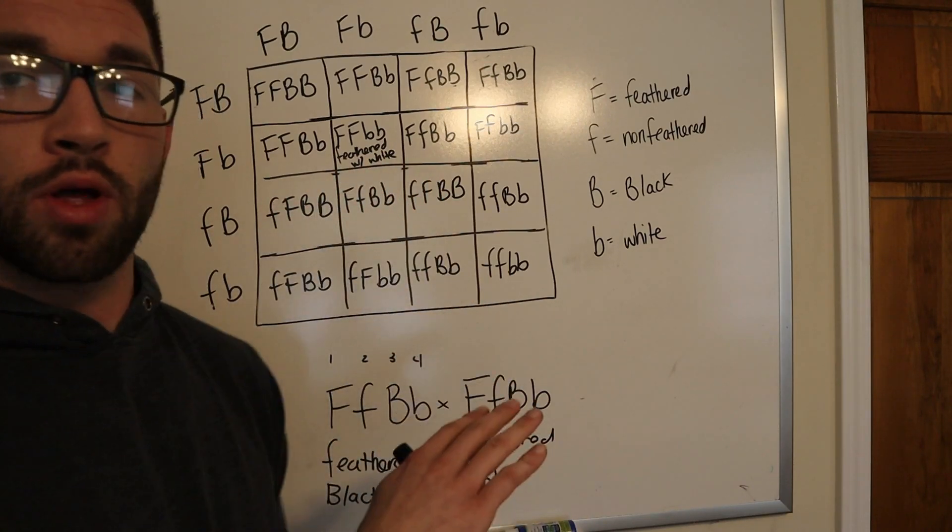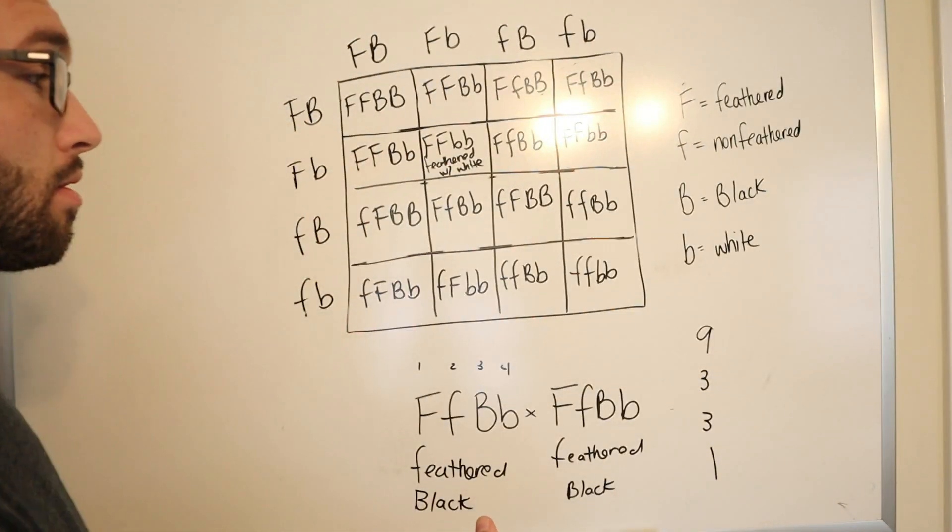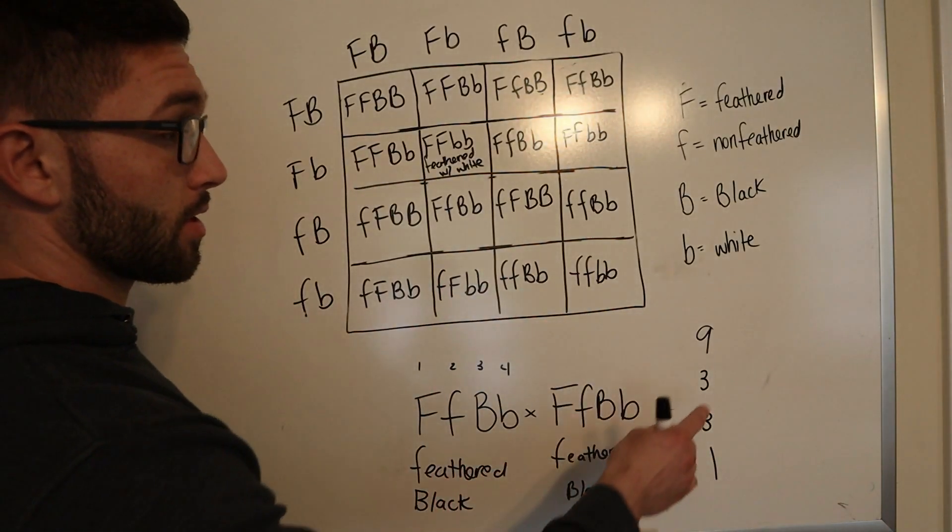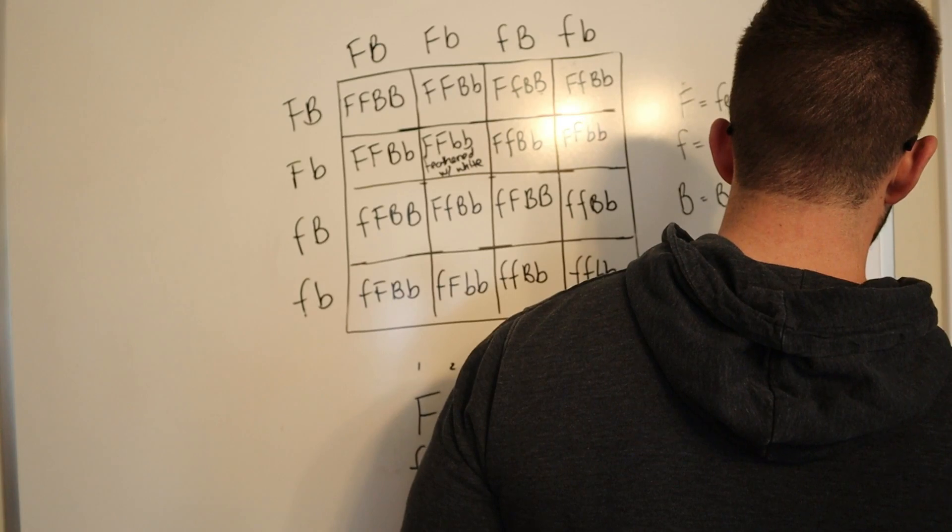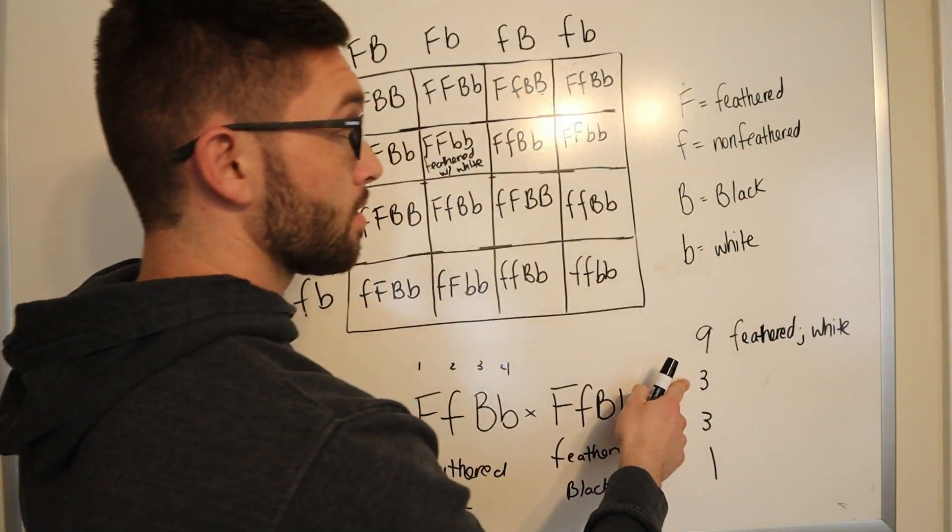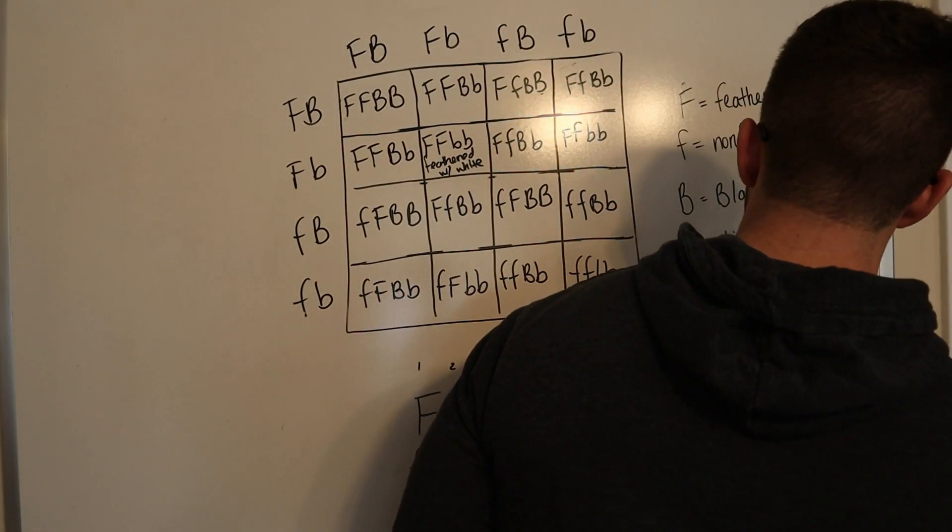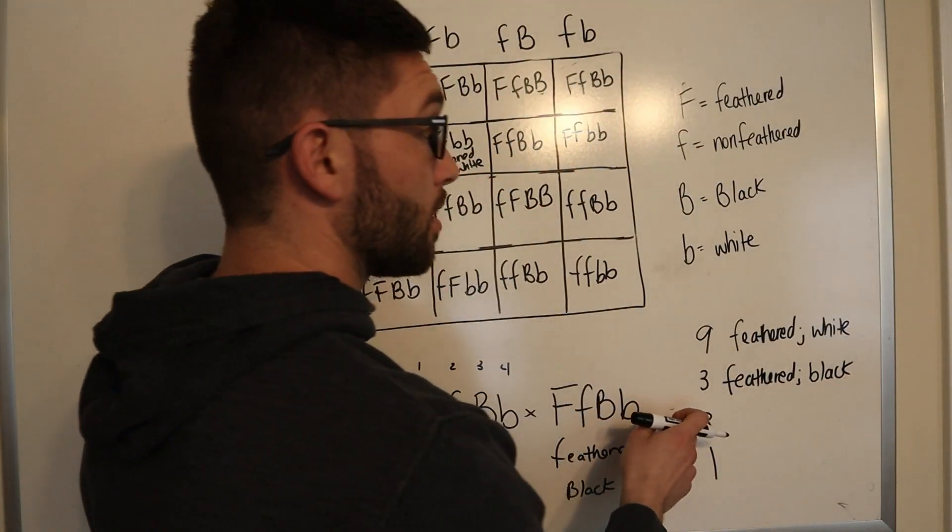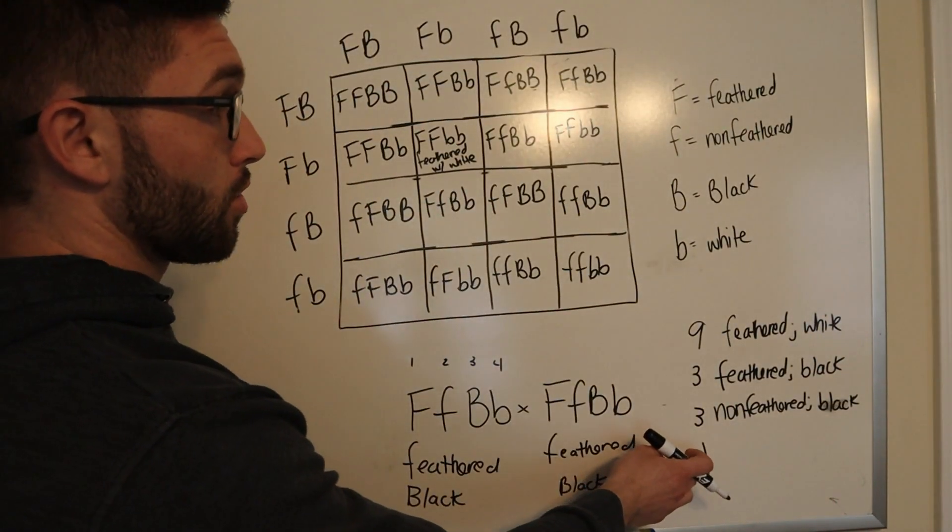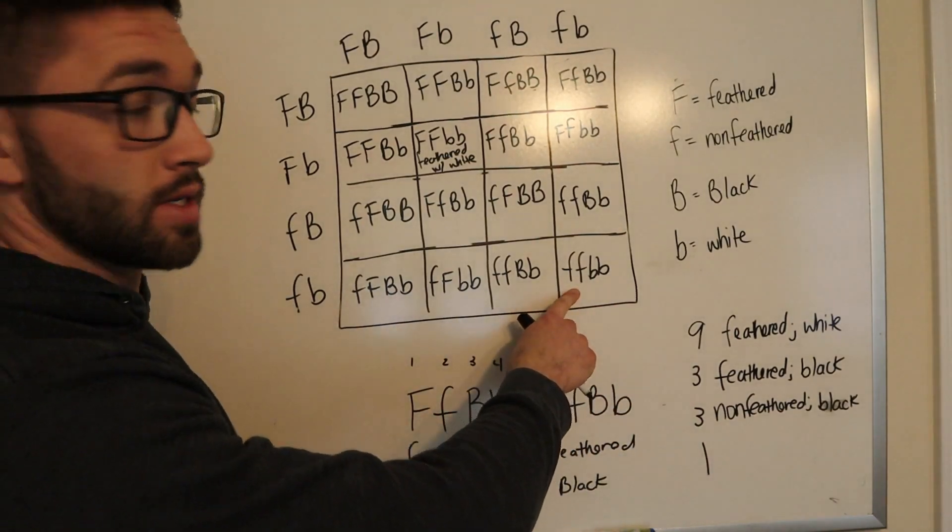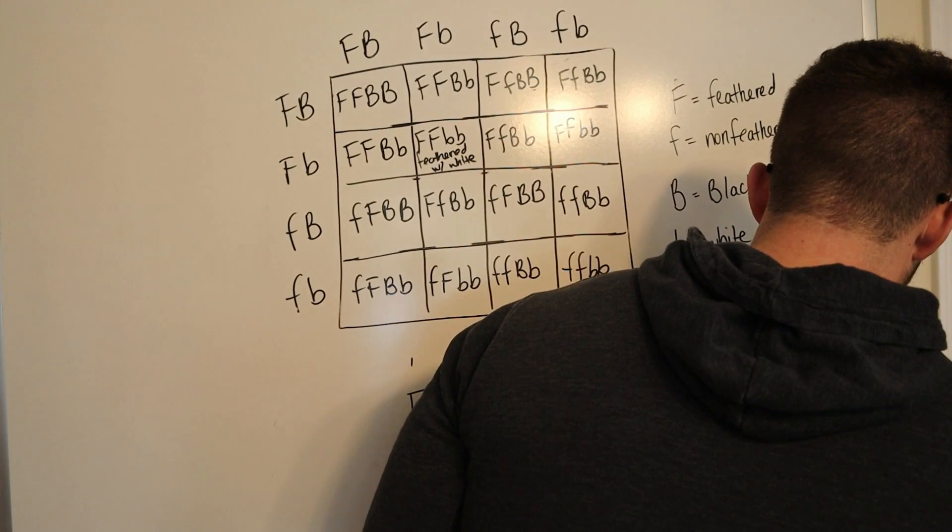And so, what you're going to get when you do a double heterozygous cross is a nine to three to three to one ratio of all the genotypes in the mix. And what I mean by that, you're going to get nine of your dominants. So you're going to get nine birds out of this cross that have feathered feet and black shanks. You're going to get three with feathered feet and white shanks, I'm sorry, and black shanks. Then you're going to get another three with non-feathered and black shanks. Finally, if you notice the one, you're only going to get one during this cross that is recessive for both traits. And so you're only going to get one bird out of this mix that has non-feathered feet with white shanks.